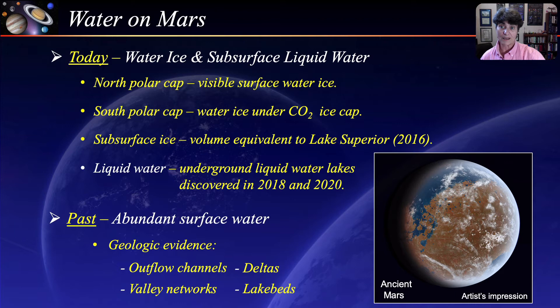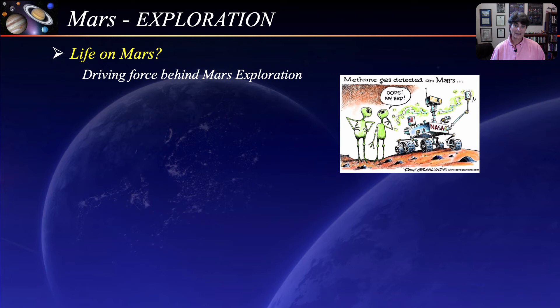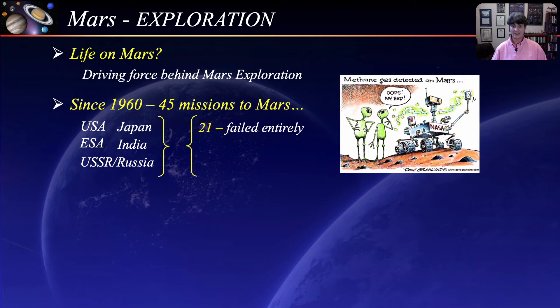Although there is no evidence of an advanced Martian civilization, the question still remains as to whether any form of life ever emerged on Mars, and the answer has been the driving force behind Mars exploration. Since 1960, space agencies from various countries have launched 45 missions to Mars. Of those 45 missions, 21 have failed entirely — including the NASA Mars Climate Orbiter that crashed in 1999 due to a metric-imperial unit mix-up. Six missions were partially successful and 18 were successful.